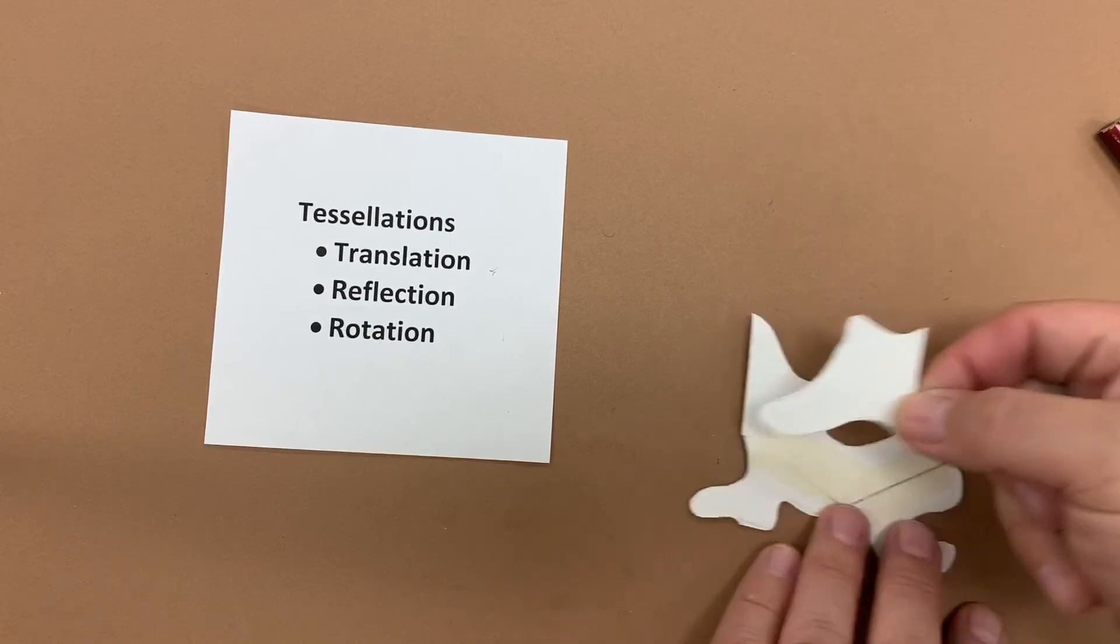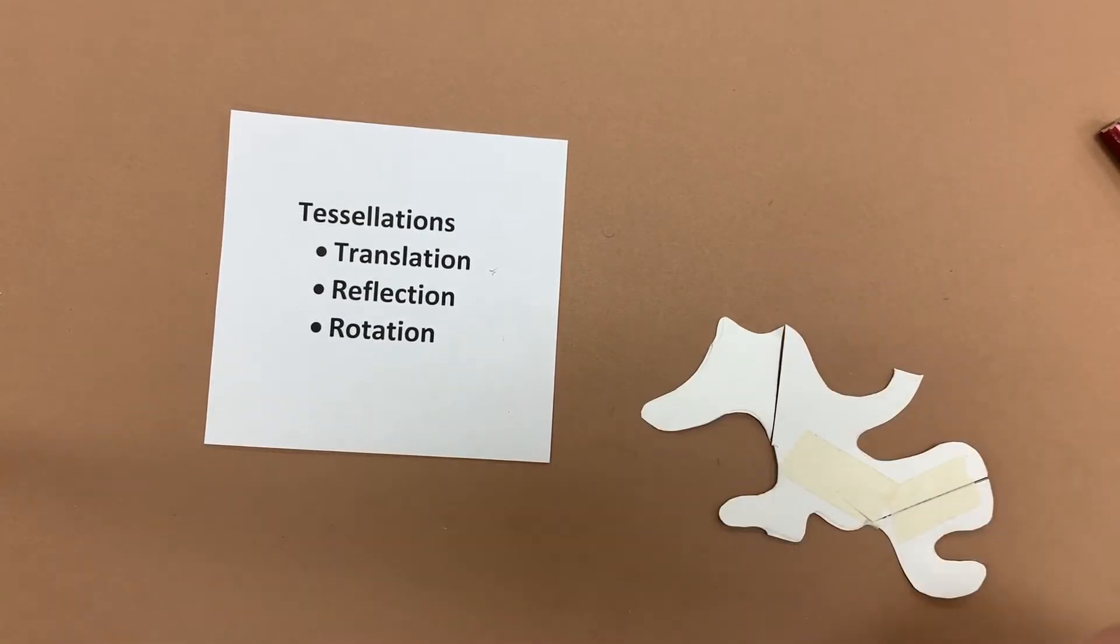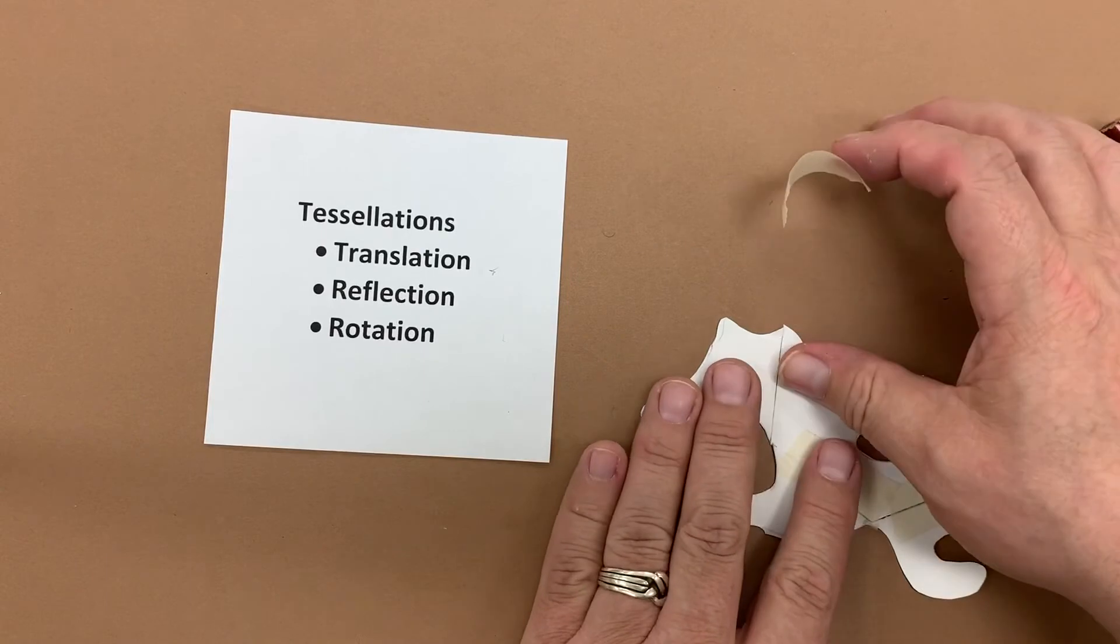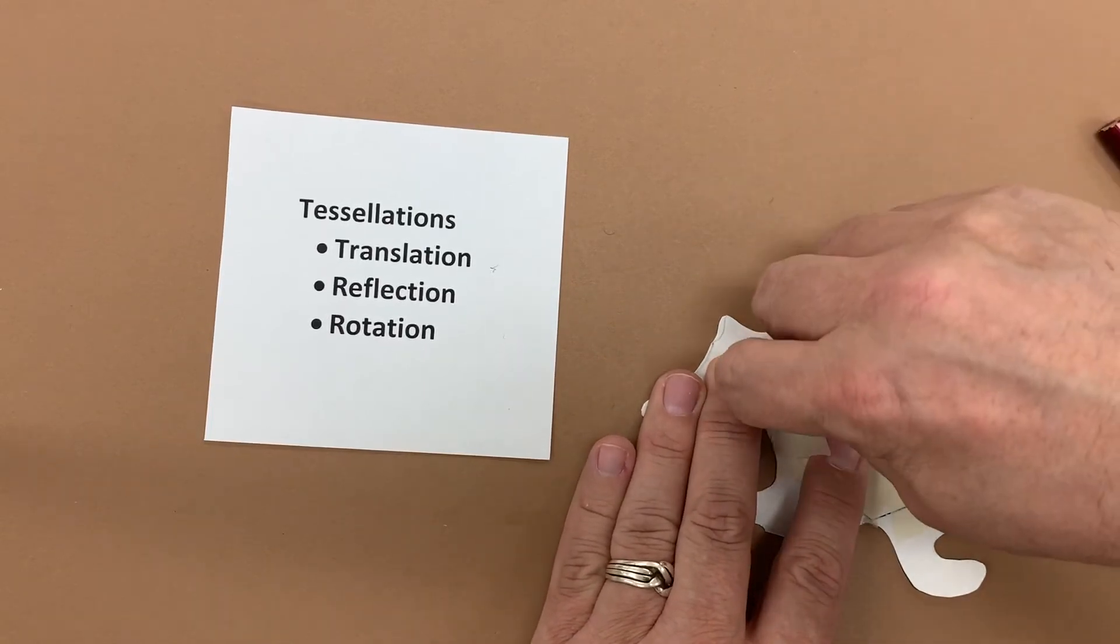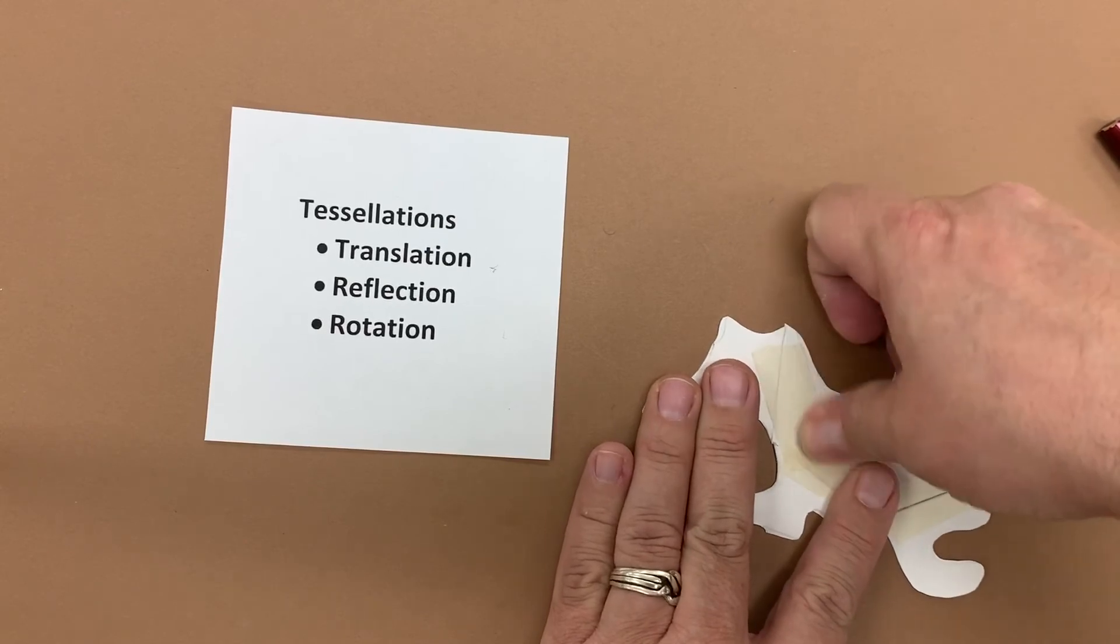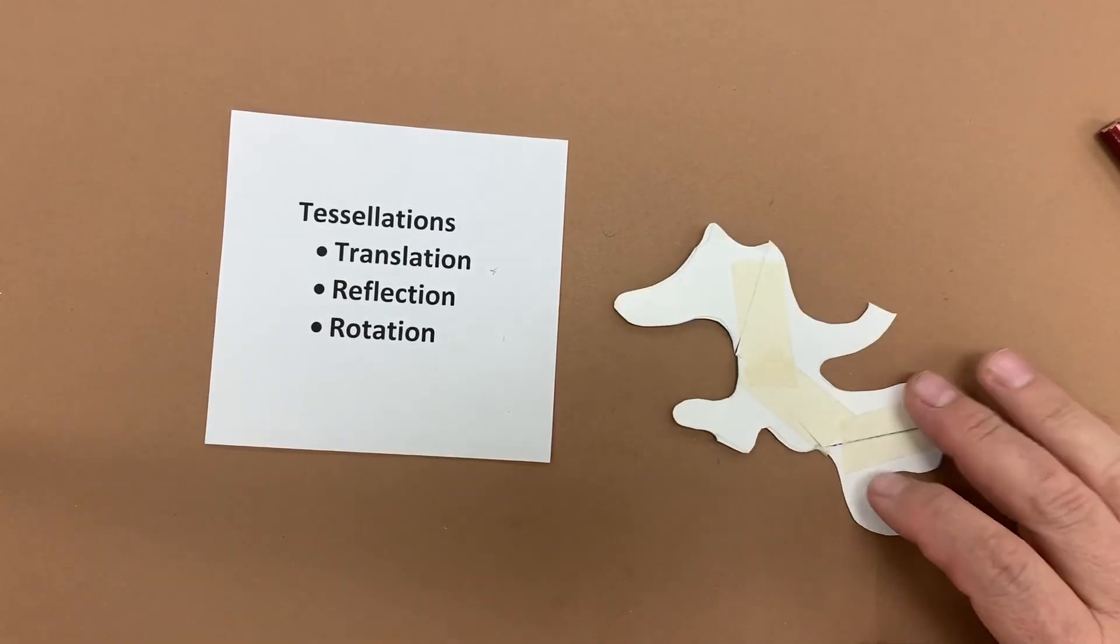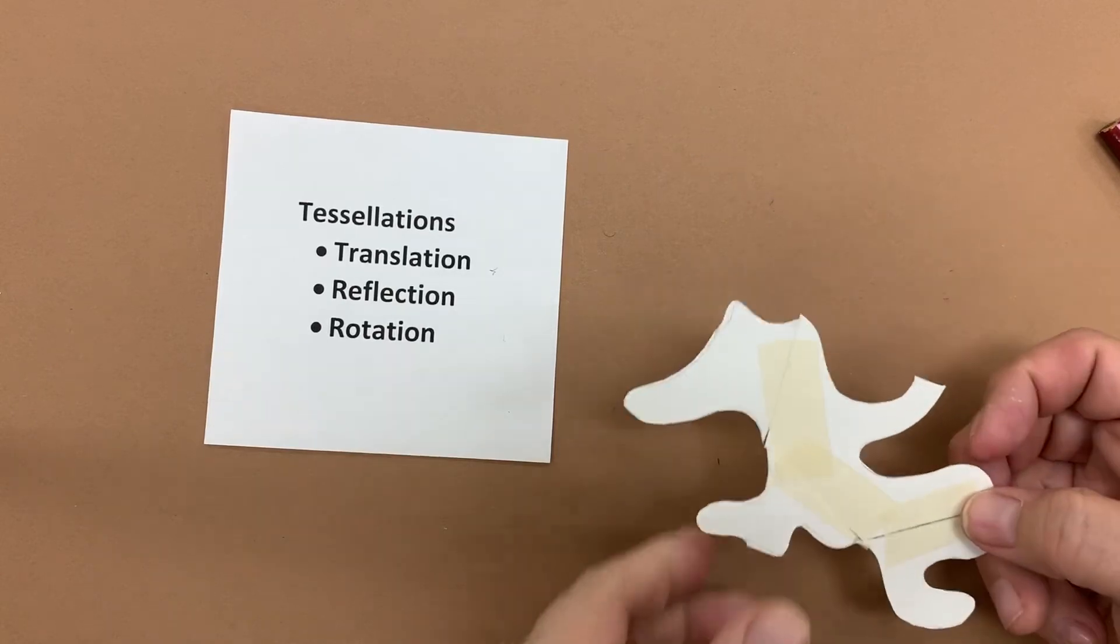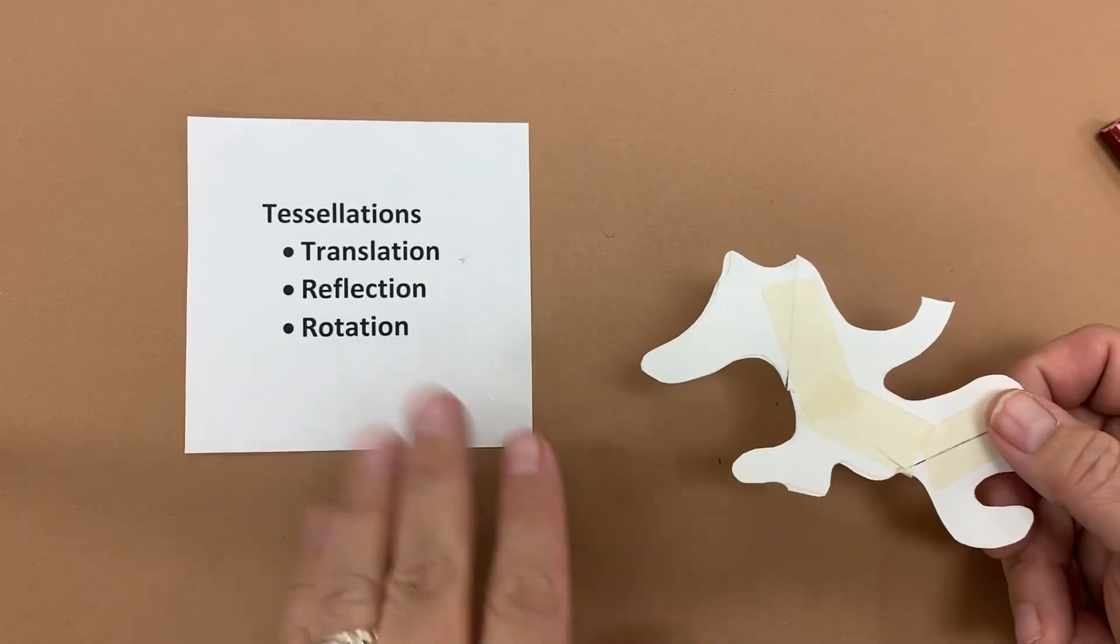Make sure it fits in and I bring it straight across and then I go ahead and tape that into place making sure there's no gaps or overlaps. And now I have a six sided hexagon tessellation.